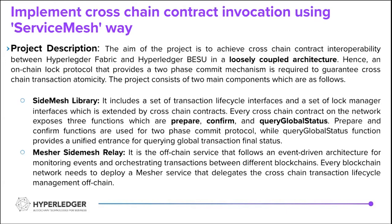My project aim was to achieve cross-chain contract interoperability between two or multiple networks. Let's say we have a Hyperledger Fabric network as a primary network and Hyperledger Besu as a secondary network.